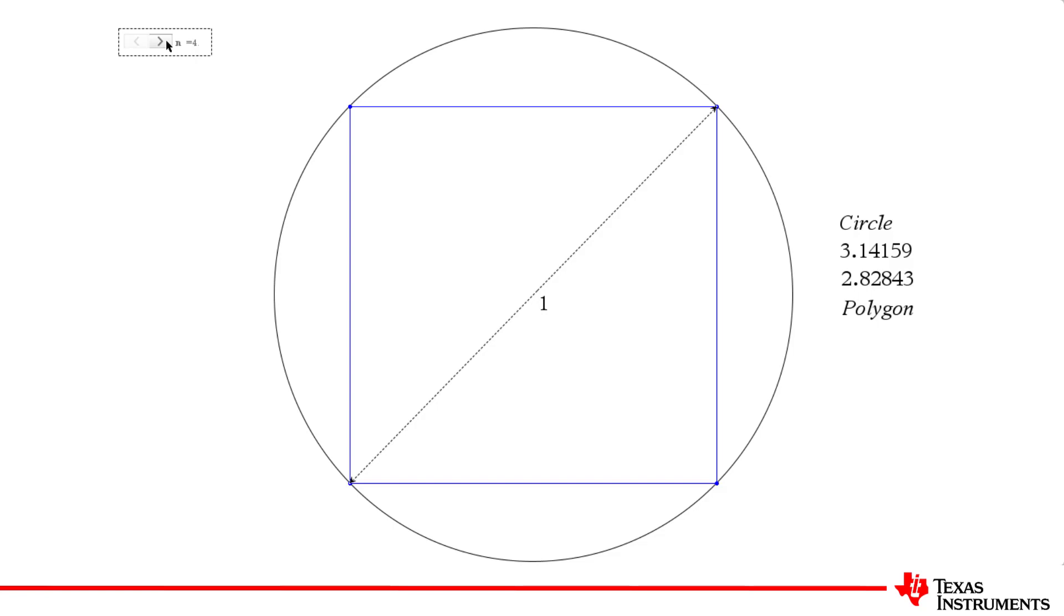If we change the square to a regular pentagon, the approximation gets a little better. So we can keep going. The perimeter of the regular polygon gets closer and closer to the circumference of the circle. Our polygon never becomes a circle, but the limit for its perimeter is defined.